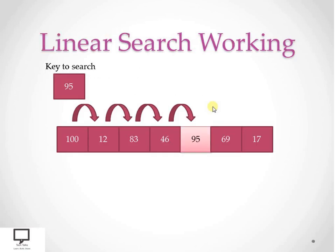How does this linear search work? A simple example: if I want to search for a key value 95 from the given set of values, I will start from the 0th position. I will compare 95 with 100 — it's not equal. It will move to the next position; the index will move to the next position.